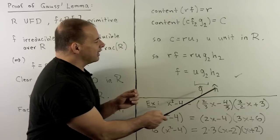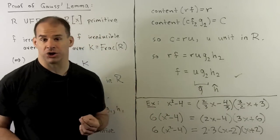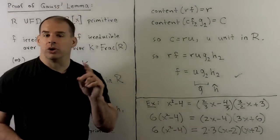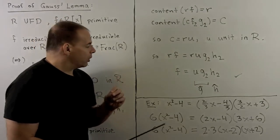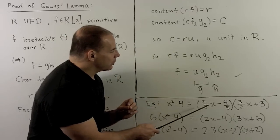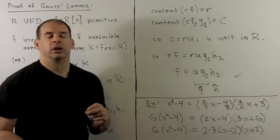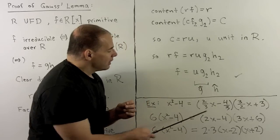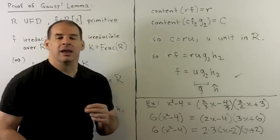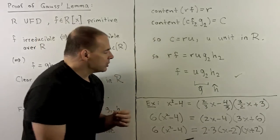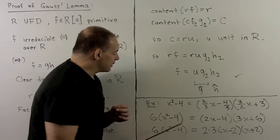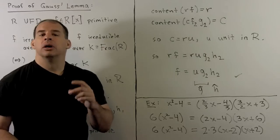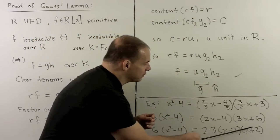For a concrete example: take x²−4 working over the integers and rationals. Suppose we use the factorization over the rationals as (⅔x − 4/3)·(3/2·x + 3). Our first step is to clear the denominators by multiplying both sides by 6, giving (2x−4)·(3x+6). Then we factor out the content from each factor: bringing out a 2 and a 3. We can then cancel the 6's on both sides, leaving x²−4 = (x−2)·(x+2). This gives a primitive factorization into two primitives over the integers.